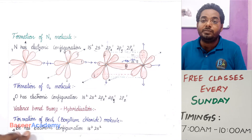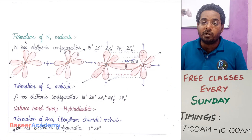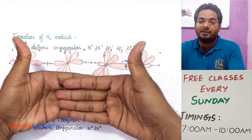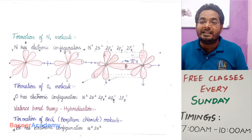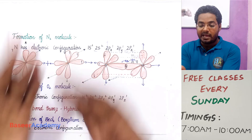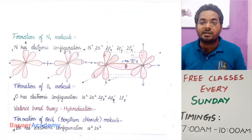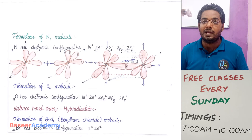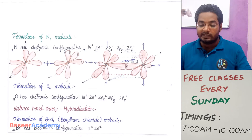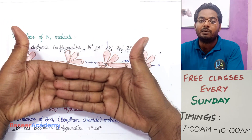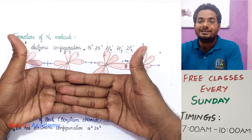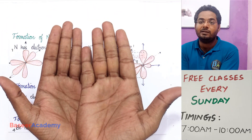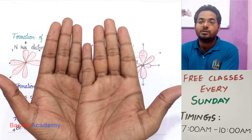Always remember: when we have multiple bonds in a molecule, the first bond will always be a sigma bond. A pi bond cannot exist independently — a pi bond cannot form without a sigma bond. So if a molecule has multiple bonds, the first bond must be a sigma bond and the remaining bonds will be pi bonds, meaning the orbitals overlap sideways.